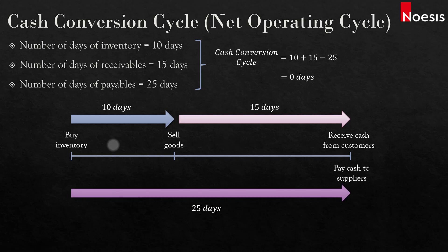In other words, on the day that we pay the cash to suppliers, we also receive cash from customers. So the cash conversion cycle is 0 — there is no gap between receiving cash and paying cash, and therefore no need for financing.